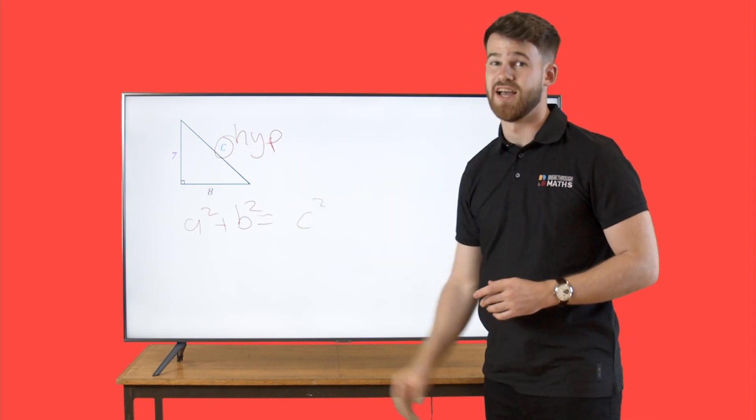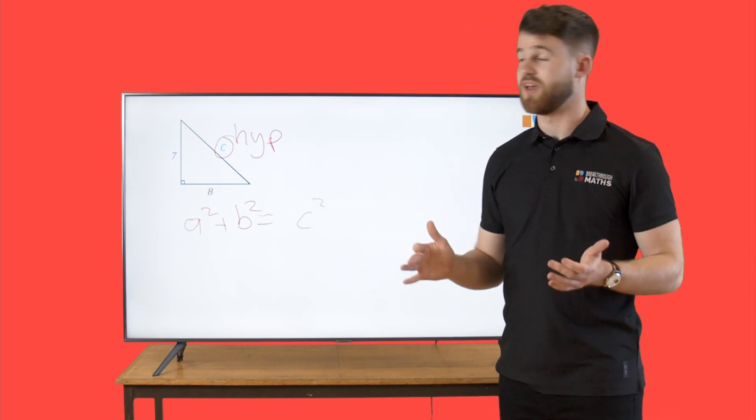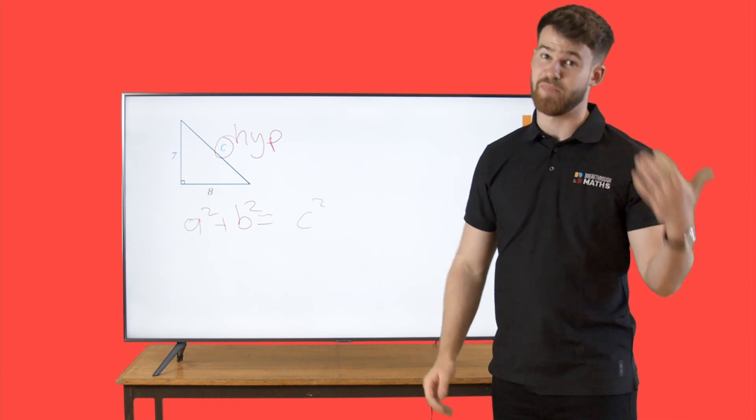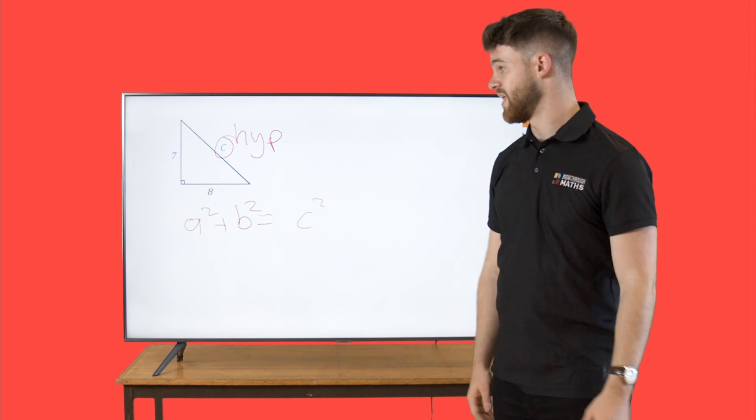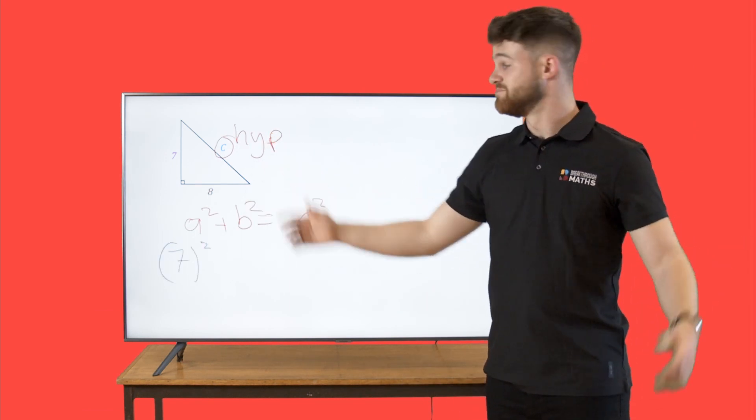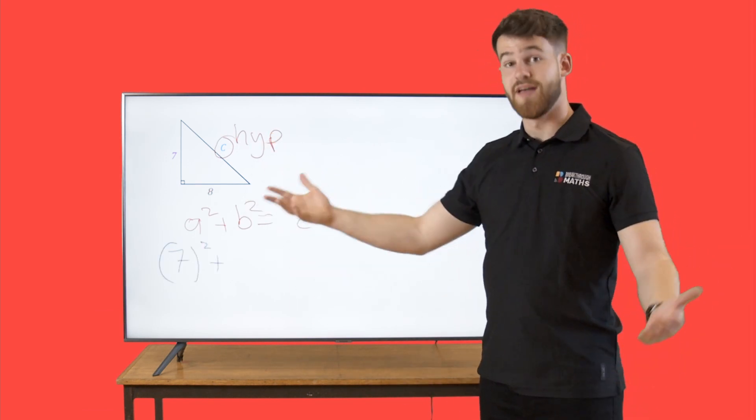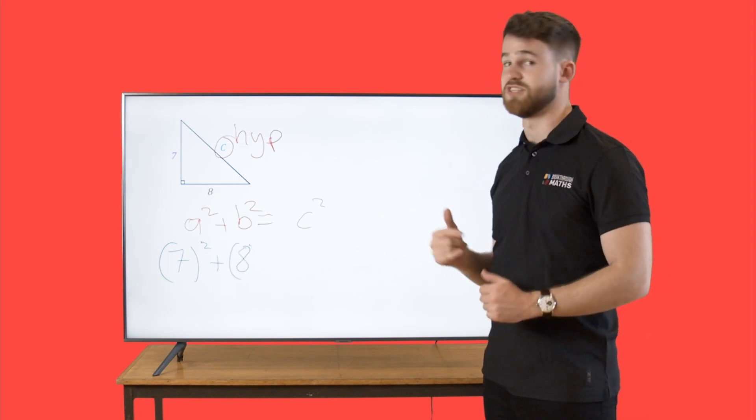For the 7 and 8 here, it doesn't matter which one you sub in as a and which one you sub in as b, as long as you don't sub them in as c. Sub in 7 for a here. 7 squared plus 8 squared is equal to c squared.